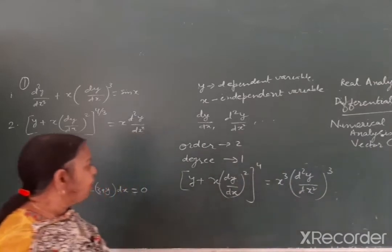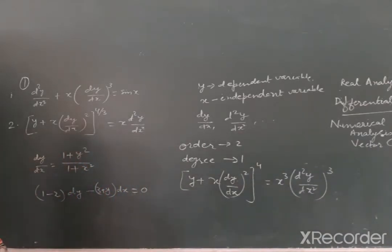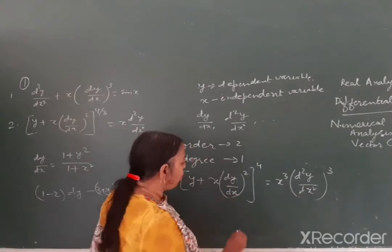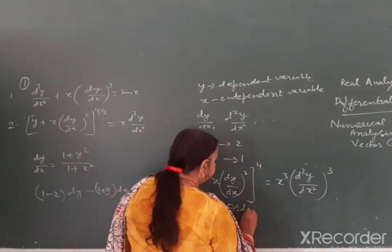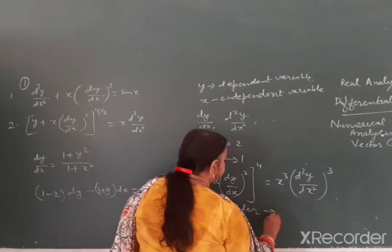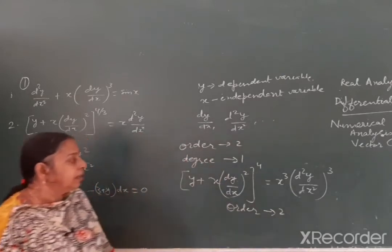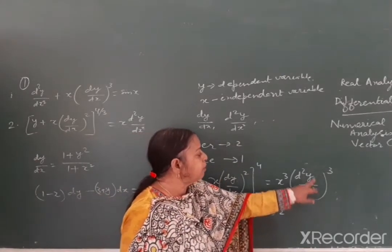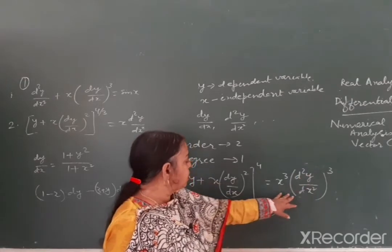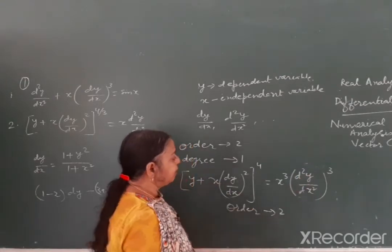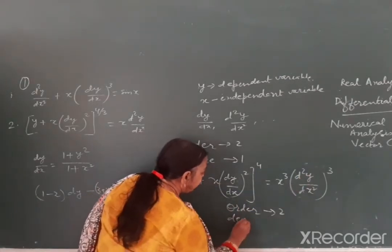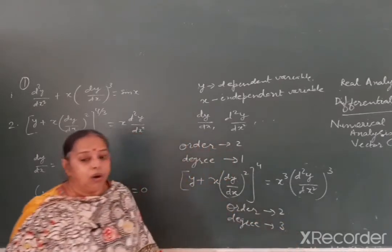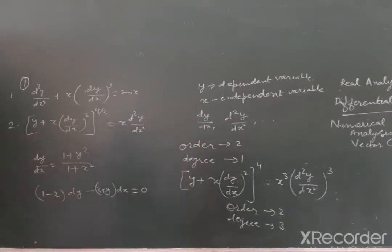Ab yahan par highest order derivative kya hai - d²y by dx². Yani iska order ho jaayega 2 aur degree ho jaayegi 3.